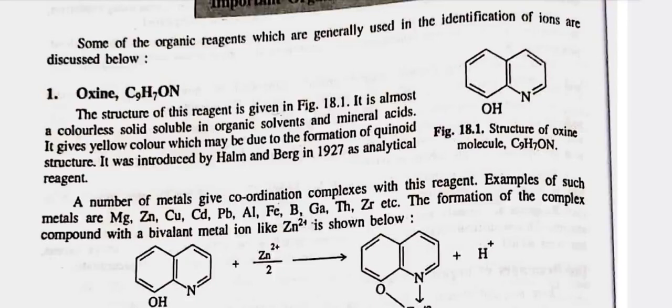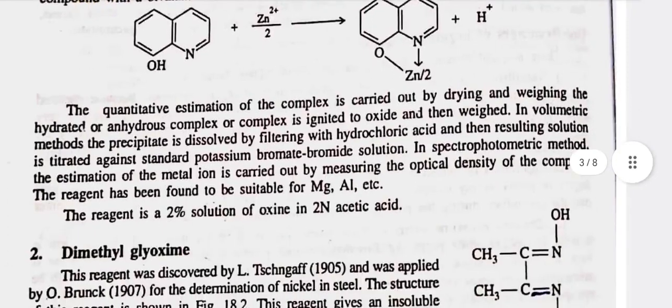A number of metals give coordination complexes with this reagent. Examples of such metals are Mg, Zn, Cu, Cd, Pb, Al, Fe, B, Ga, Th, Zr, etc. The formation of the complex compound with a bivalent metal ion like Zn²⁺ is shown below. The quantitative estimation of the complex is carried out by drying and weighing the hydrated or anhydrous complex. The complex is ignited to oxide and then weighed. In volumetric methods, the precipitate is dissolved by filtering with hydrochloric acid and the resulting solution is titrated against standard potassium bromide-bromate solution. In spectrophotometric method, the estimation of the metal ion is carried out by measuring the optical density of the complex. The reagent has been found to be suitable for Mg, Al, etc. The reagent is a 2% solution of oxine in acetic acid.